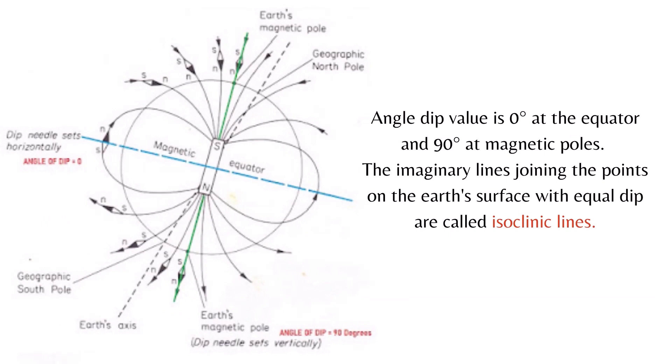Its value is zero degrees at the equator and 90 degrees at magnetic poles. The imaginary lines joining the points on the earth's surface with equal dip are called isoclinic lines. You can read the complete article; the link is given in the description below.